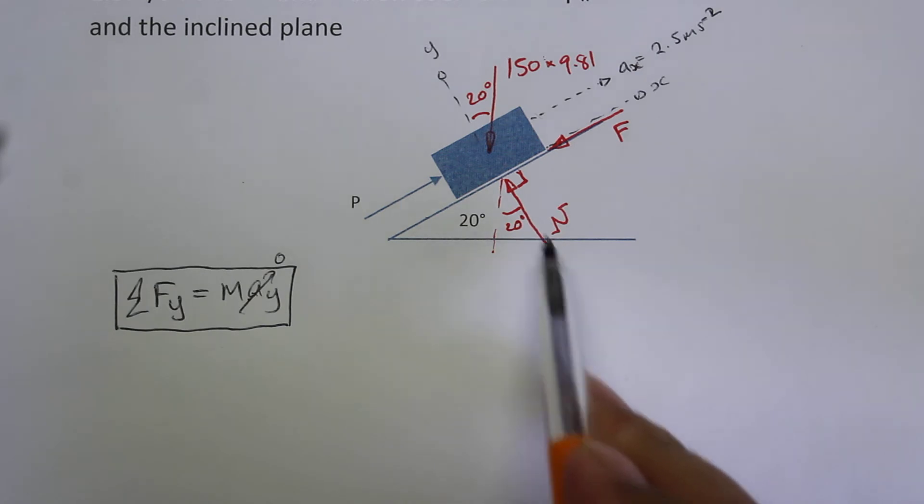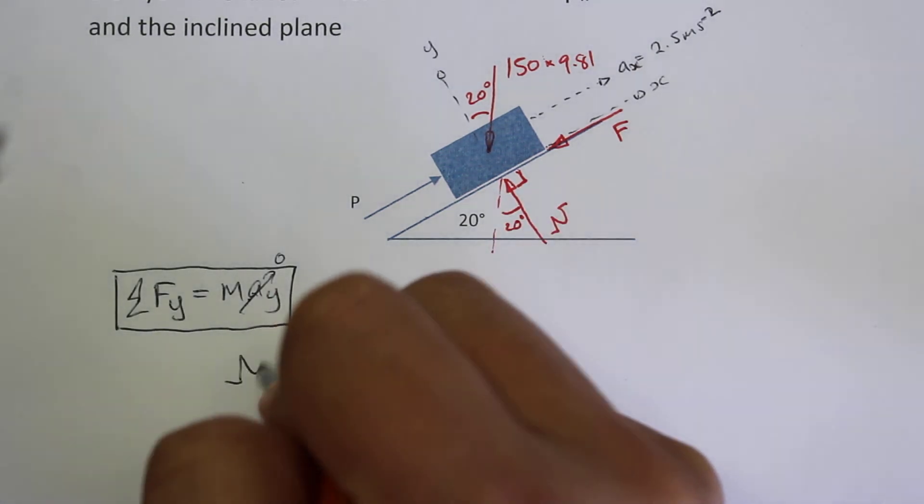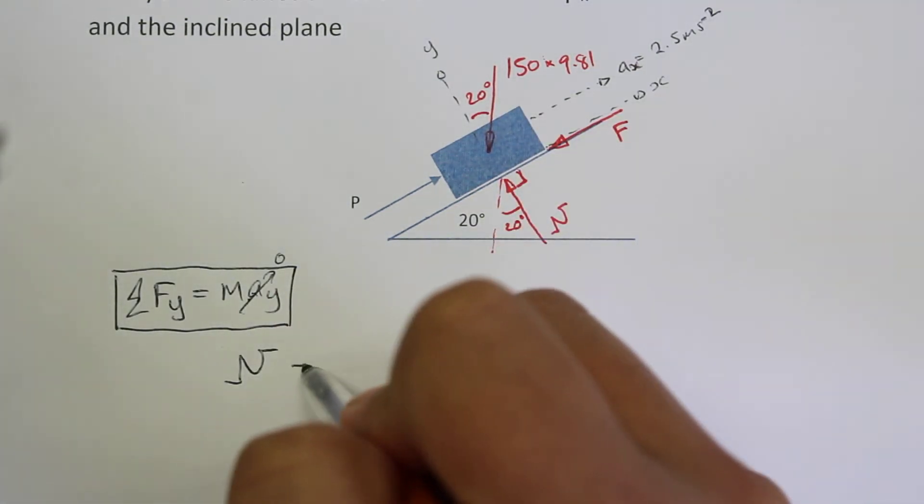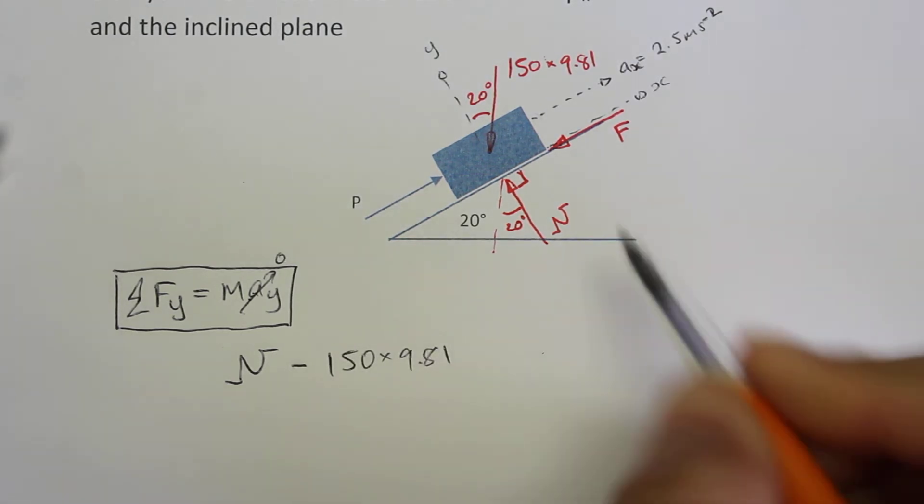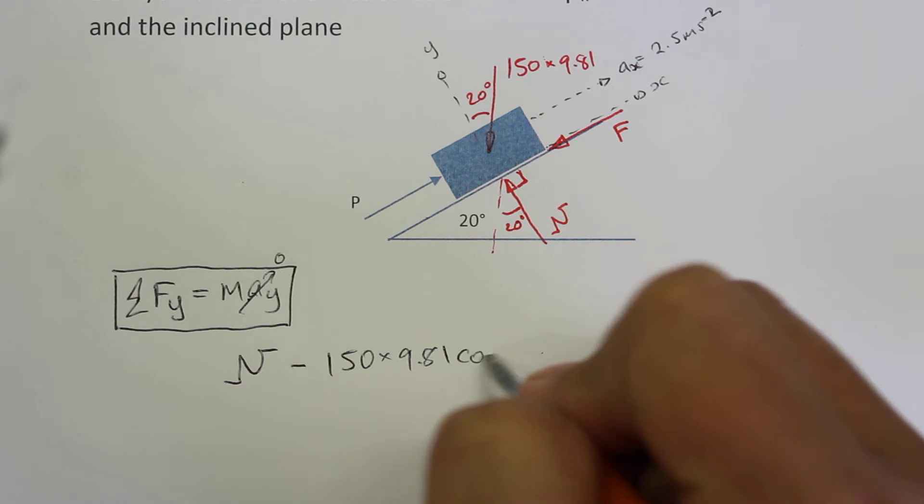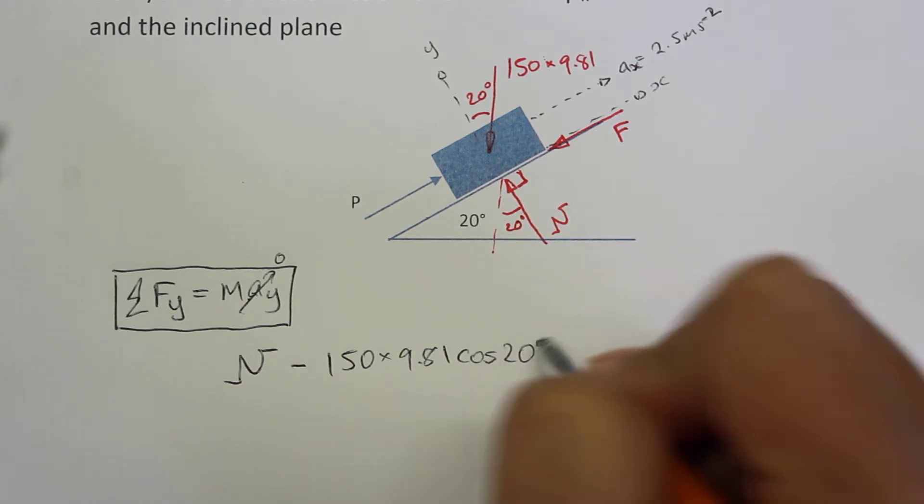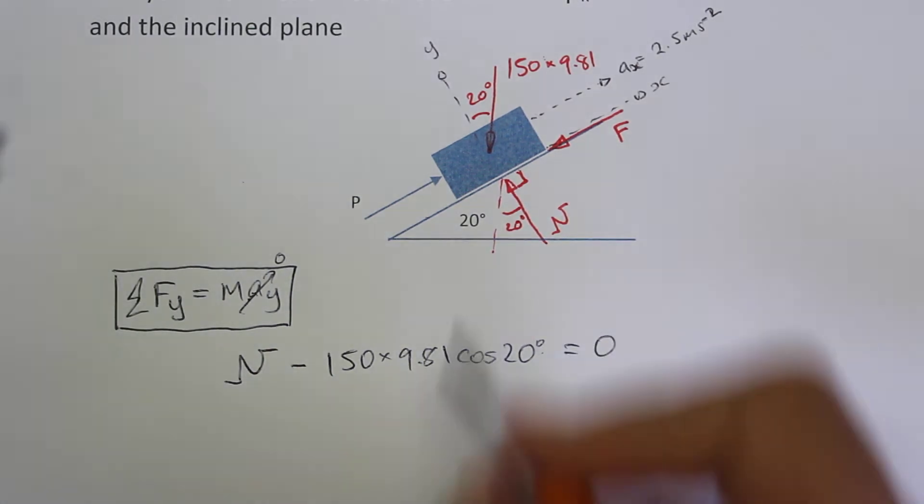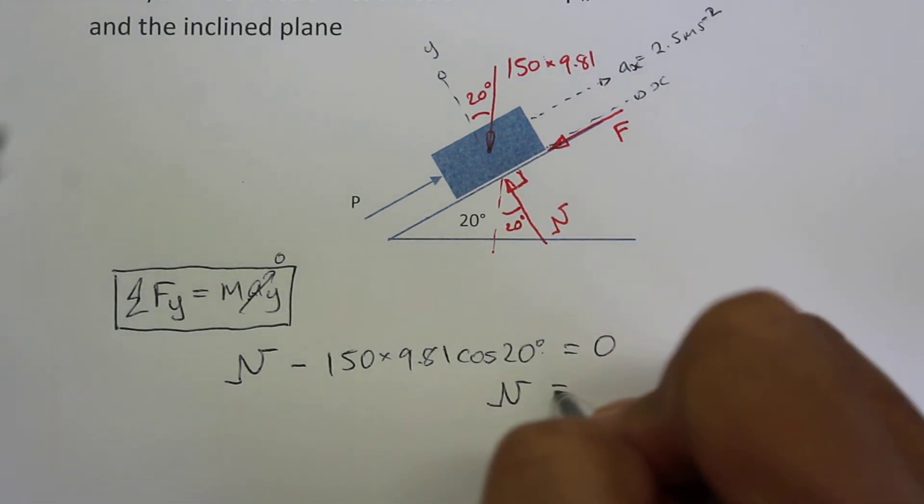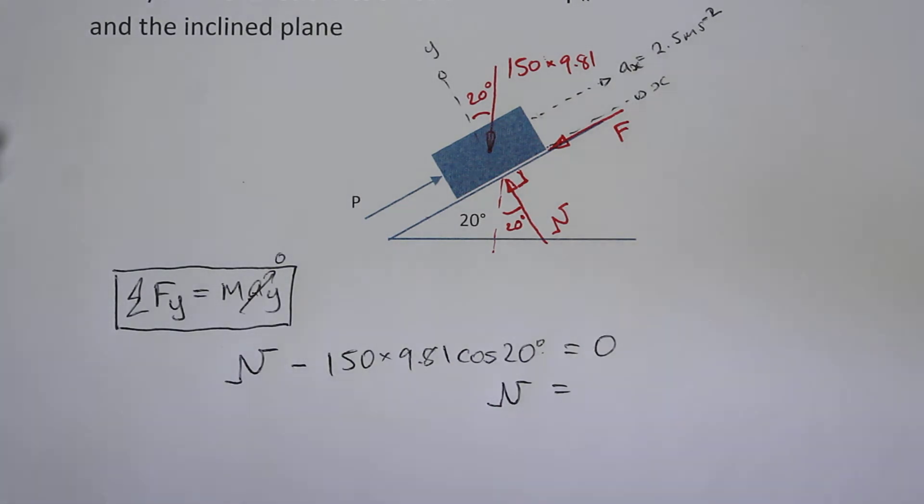So we can write down that the normal force minus 150 times 9.81 times cosine of 20, so that's the y component of that force, is equal to zero. We can rearrange this equation and solve for the normal force.